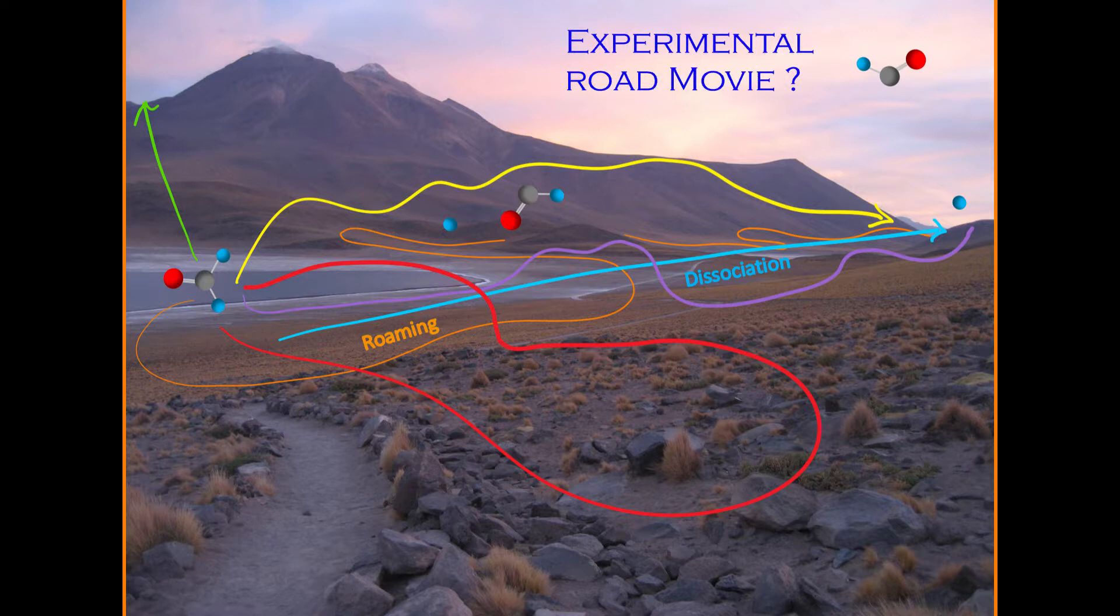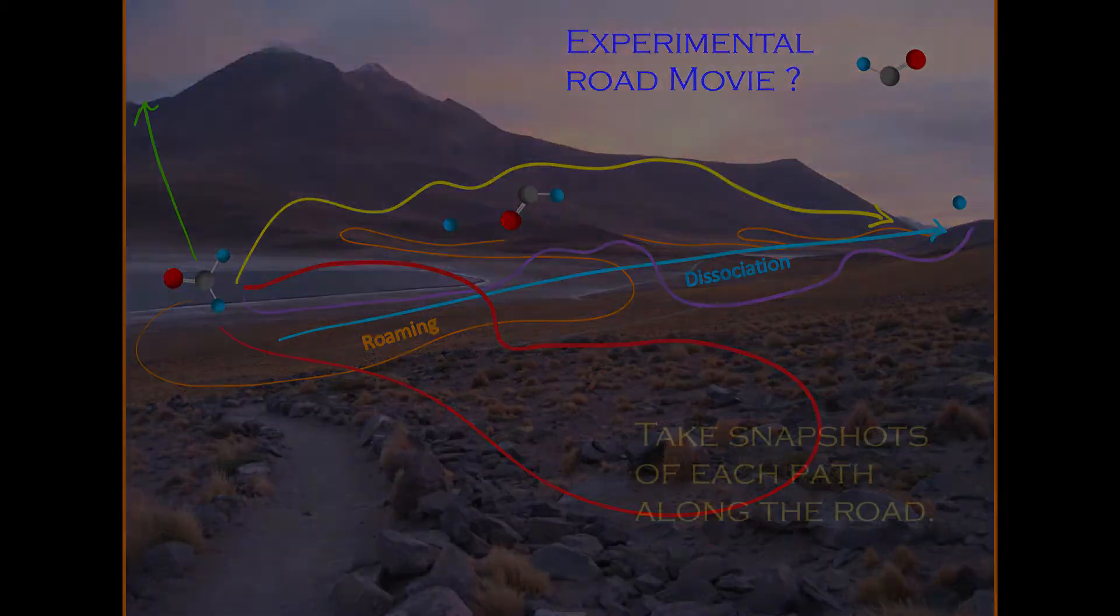How can we make an experimental road movie then? We have to take snapshots of each path along the road.